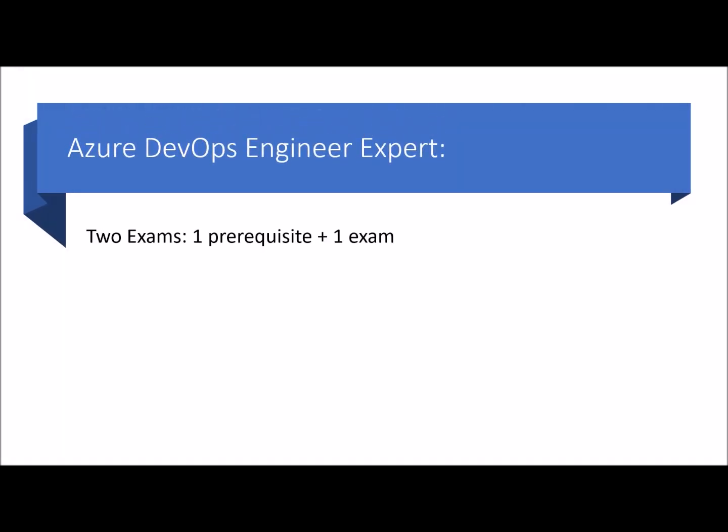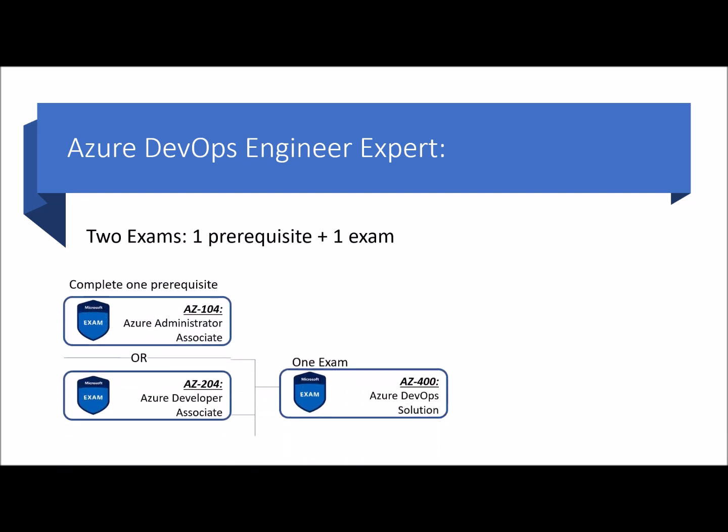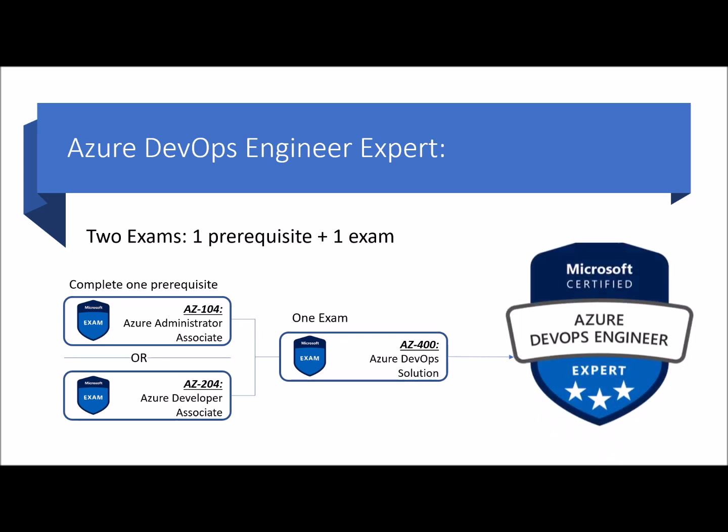The next role-based certification is Azure DevOps Engineer Expert. To get certified, you should complete one prerequisite exam — either AZ-104 (Azure Administrator Associate) or AZ-204 (Azure Developer Associate) — in combination with AZ-400, which is Azure DevOps Solutions. Candidates for this exam are DevOps professionals who combine people, processes, and technologies to continuously deliver valuable products and services that meet end-user needs and business objectives. Azure DevOps professionals must be able to design and implement DevOps practices for version control, compliance, infrastructure as code, configuration management, build, release, and testing using Azure technologies.